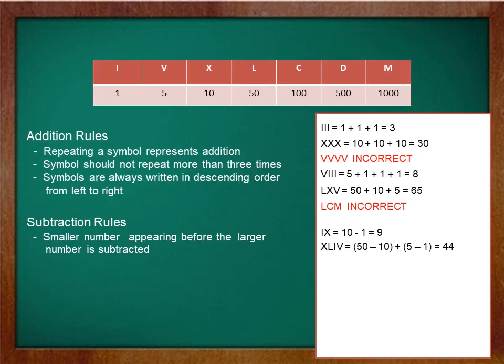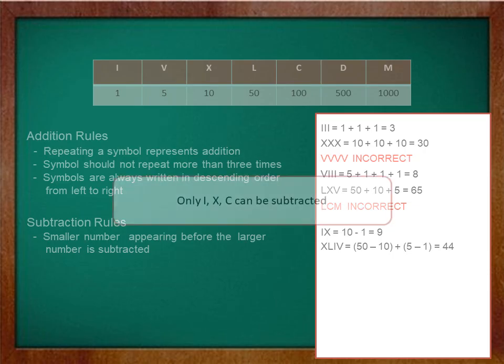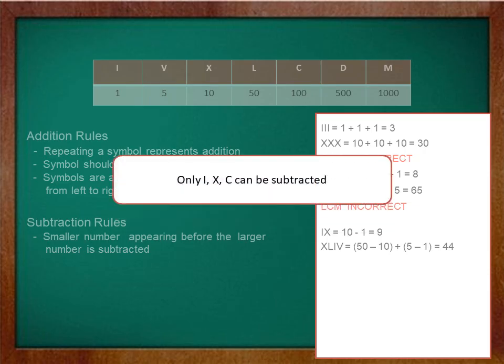Next rule says only I, X, and C can be subtracted. That is you can only subtract 1, 10, 100. Another way to look at this rule is that you cannot subtract V, L, D. That is you cannot subtract 5, 50, 500.